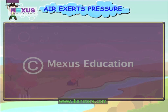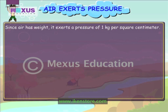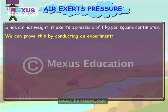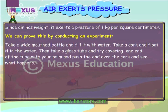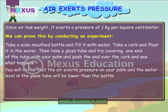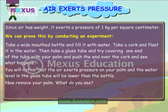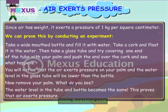Air exerts pressure. Since air has weight, it exerts a pressure of 1 kg per square centimeter. We can prove this by conducting an experiment. Take a wide mouthed bottle and fill it with water. Take a cork and float it in the water. Then take a glass tube and try covering one end of the tube with your palm. Push the end over the cork and see what happens. You will notice that the air exerts pressure on your palm and the water level in the glass tube will be lower than the bottle. Now remove your palm. The water level in the tube and bottle becomes the same. This proves that air exerts pressure.